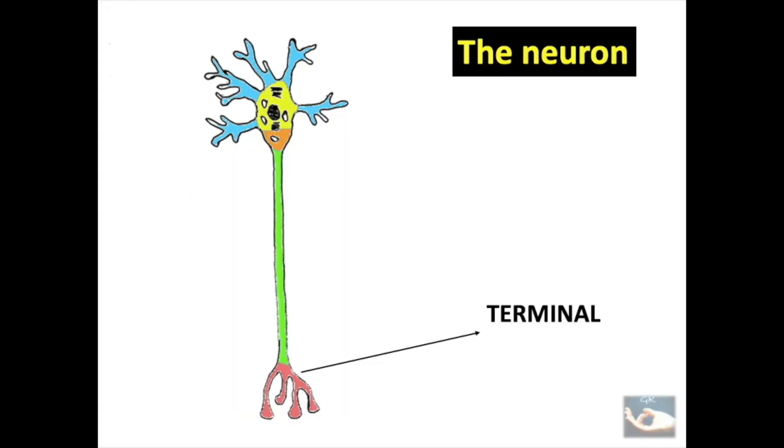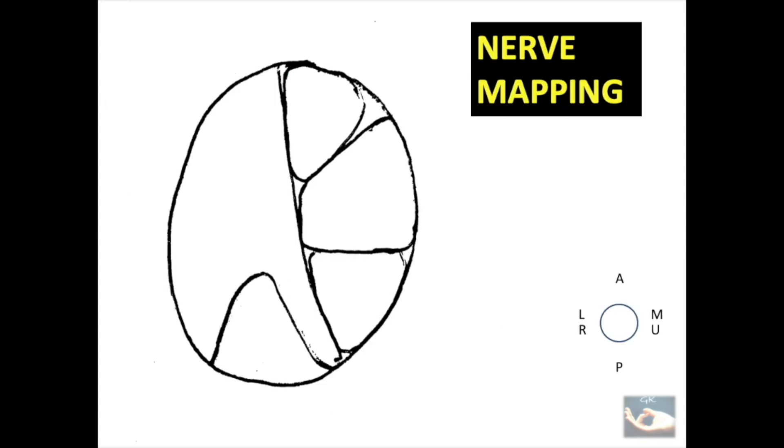The axon ends in a terminal otherwise known as the synapse. As far as the nerve anatomy is concerned, there is something known as functional anatomy that is which sort of fiber is present in which part of the nerve that is nerve mapping.